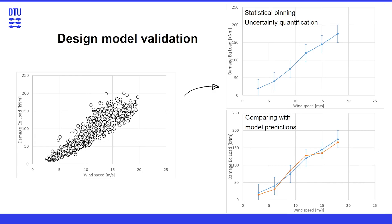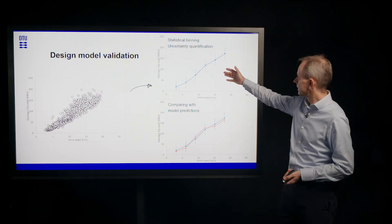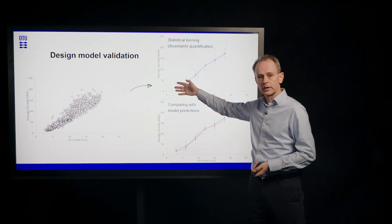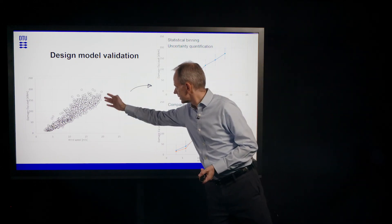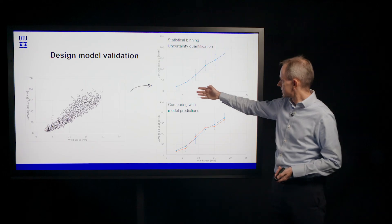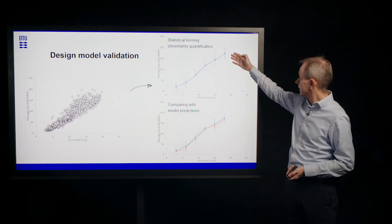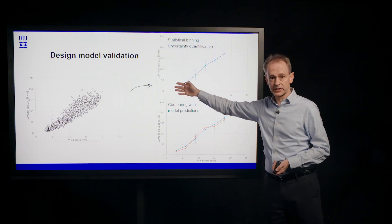When we are validating our design model, we use the measured signals and then we do some analysis of that. Here it's illustrated as what we call a wind speed binning. So now we, for various intervals of the wind speed, do statistical analysis including what is the uncertainty in the measurements.